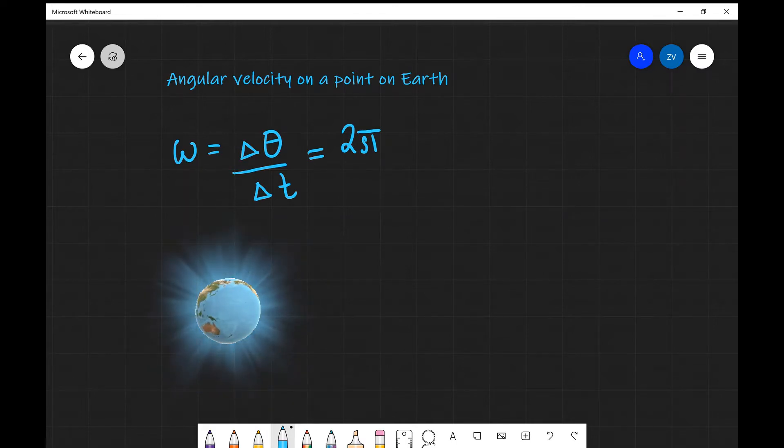So 2 pi radians, 1 full revolution and this will happen over a period of 24 hours. So my delta t will be 24 hours.